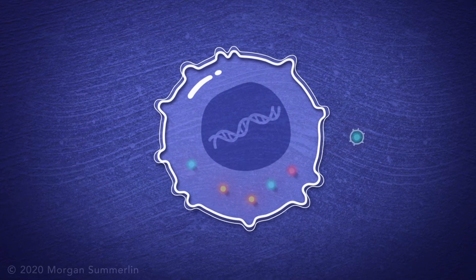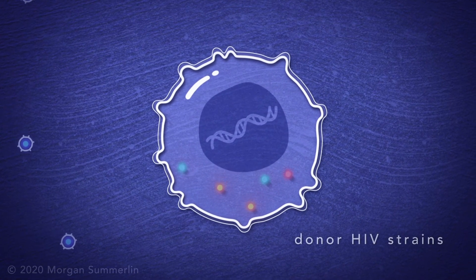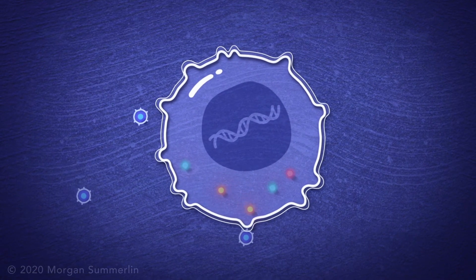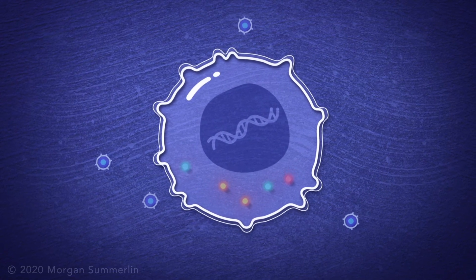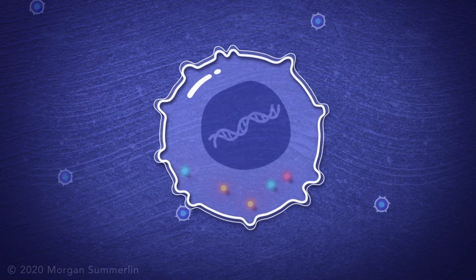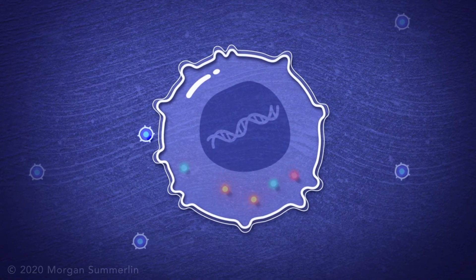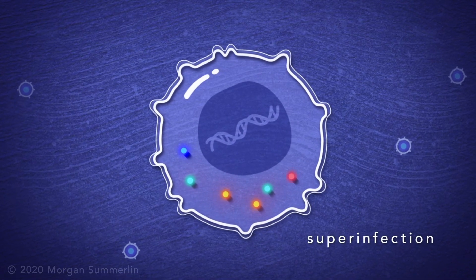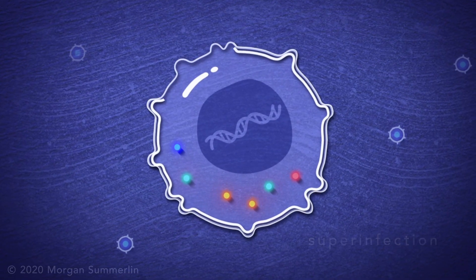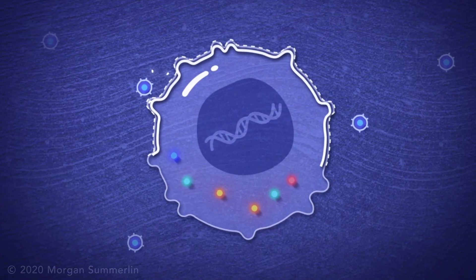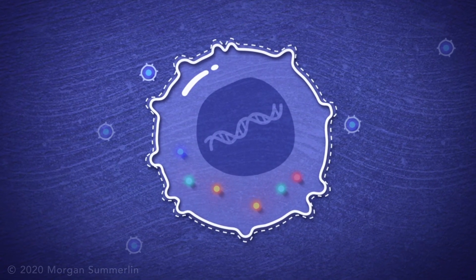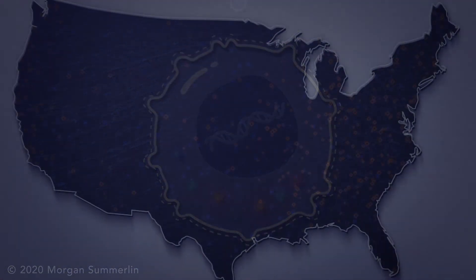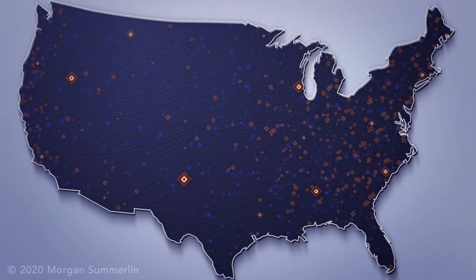When someone with HIV is given an organ from a donor with HIV, new strains of the virus can be introduced with the organ. Fortunately, the recipient's current HIV medicines are likely to control the new strains from the donor. However, the recipient could become infected with the new strains in addition to their existing HIV infection. This is called superinfection. If superinfection occurs, different HIV medicines will be tried until an effective new combination is found. Fortunately, studies show that the risk of superinfection is low compared to the greater risk of dying while waiting for an organ.